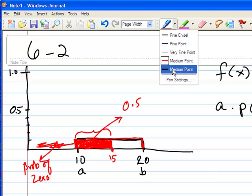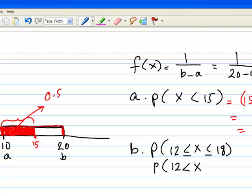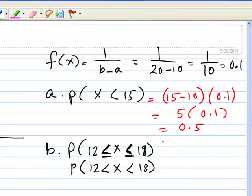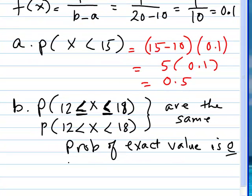Part B says probability that X is greater than or equal to 12 or less than or equal to 18. Now, we know for continuous variables, whether I say probability of X being greater than 12 and less than 18, or whether I say X is greater than or equal to 12 and less than or equal to 18, both of these are the same. The reason for that is because the probability of an exact value is 0 for a continuous random variable.